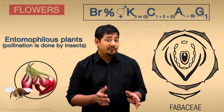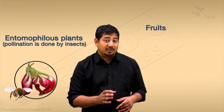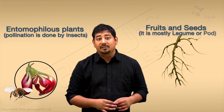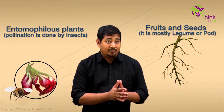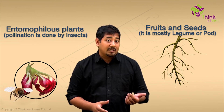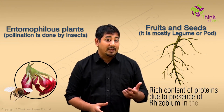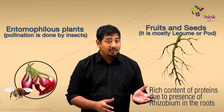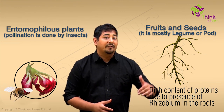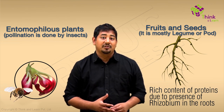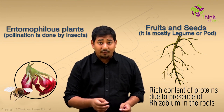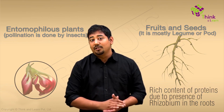When it comes to their fruits and seeds, most of the time these plants form legumes or pods. The family has seeds with or without endosperm, and there is a rich content of proteins in their fruit due to the presence of Rhizobium in the root. Certain plants like ground nuts even have oil in their seed that finds commercial use.